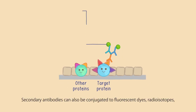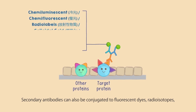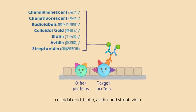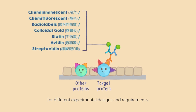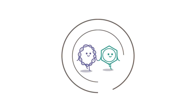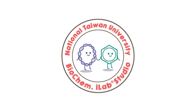Secondary antibodies can also be conjugated to fluorescent dyes, radioisotopes, colloidal gold, biotin, avidin, and streptavidin for different experimental designs and requirements.